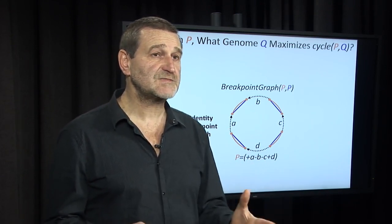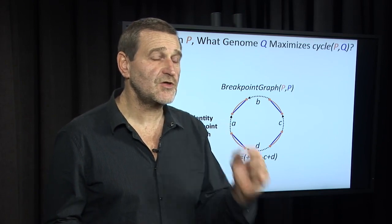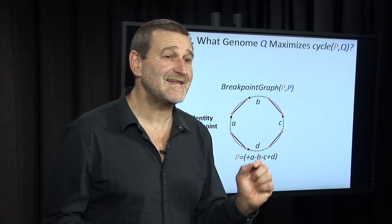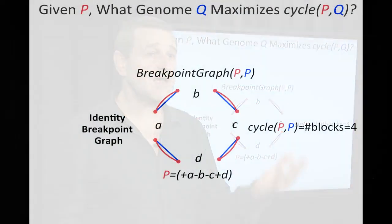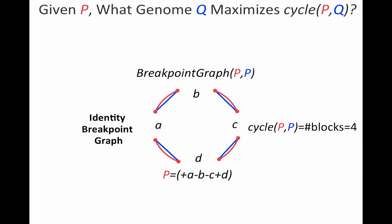And of course, this breakpoint graph corresponds to the case when genome Q and genome P are identical. And the number of cycles in this graph is simply the number of blocks in genome P. So in this case, the number is four.